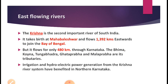Now let me explain the first type — east flowing rivers. There are a number of east flowing rivers in our state. Among them, the most prominent is river Krishna, one of the second longest rivers in south India and the longest river in Karnataka. The total length of this river is 1392 kilometers. It originates from Mahabaleshwar in Maharashtra, near the Western Ghats, and finally joins with the Bay of Bengal.